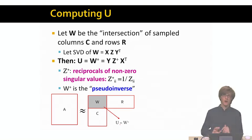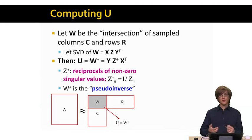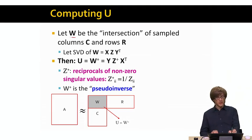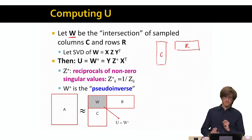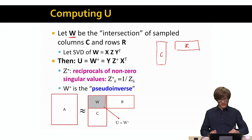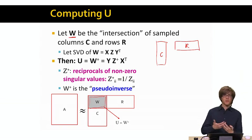So now that we have C and R created, the question is how do we compute matrix U? And the way we will compute matrix U is first we will define the matrix W to be the intersection of rows and columns that we sampled. So if I think of my columns C and my row matrix R, what is matrix W is basically the intersection of these rows. So I will only take rows and columns that appear both in C and R. And this will generate me the matrix W.